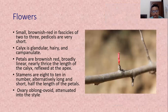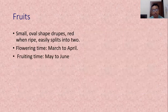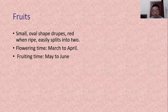The flowers are very small, brownish red in color. The fascicles of 2 and 3 are found. Pedicels are very small. Calyx is glandular, hairy and campanulate. Petals are brownish red, broadly linear. Stamens are 8 to 10 in number, alternately long and short. Ovary is oval and gradually attenuated into the style. The red color image in the slide is the flower of Gugul. Fruits are also very small, oval-shaped drupes. They become red when ripe and easily split into two parts. The flowering season is March to April and the fruiting season is May to June.